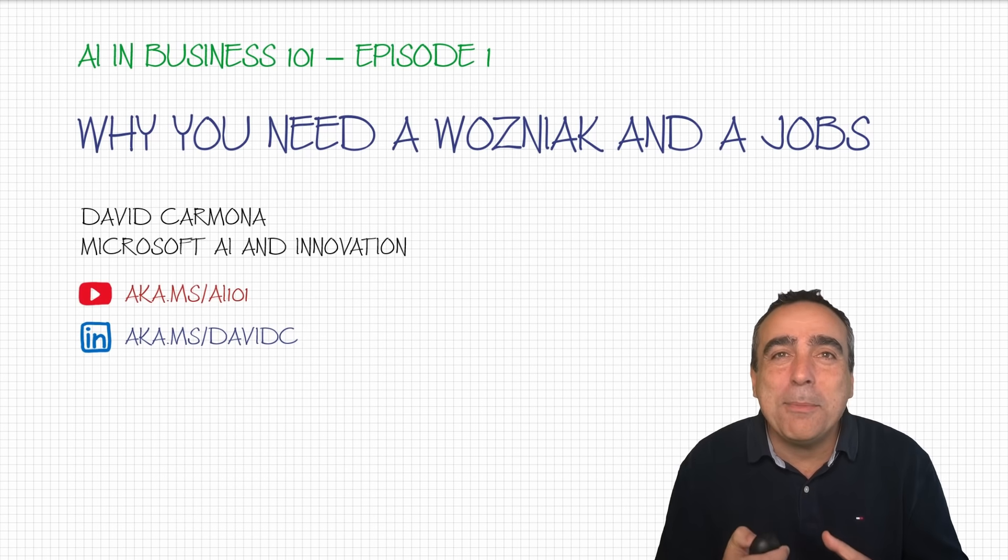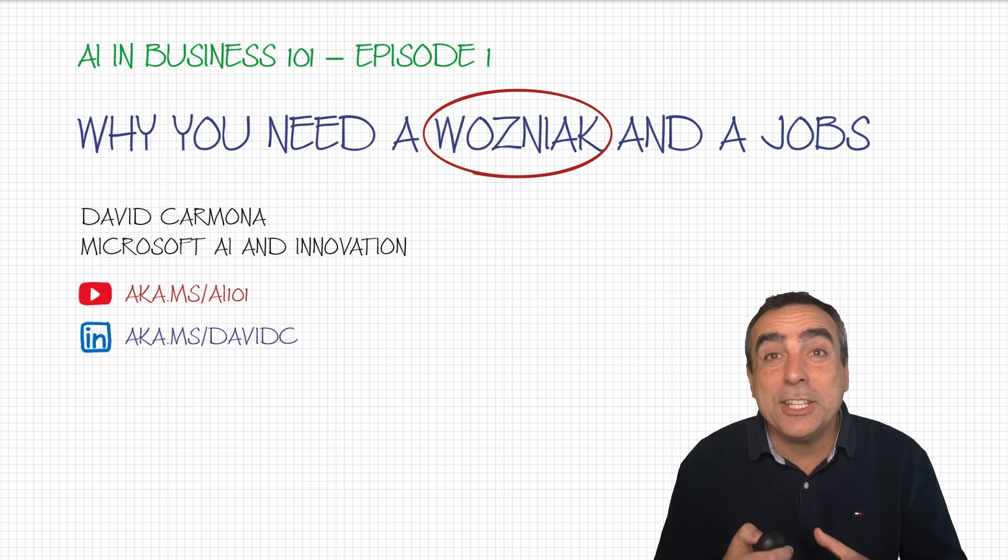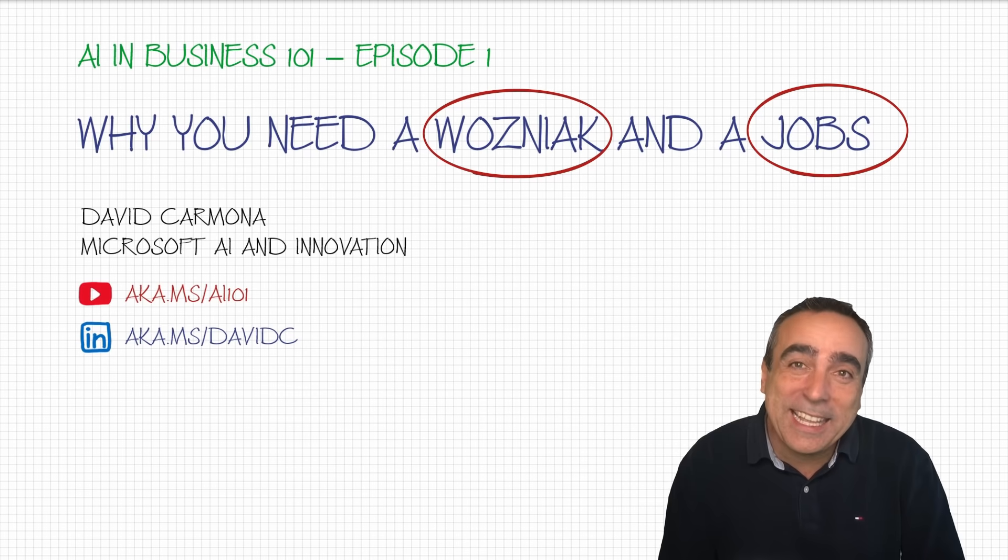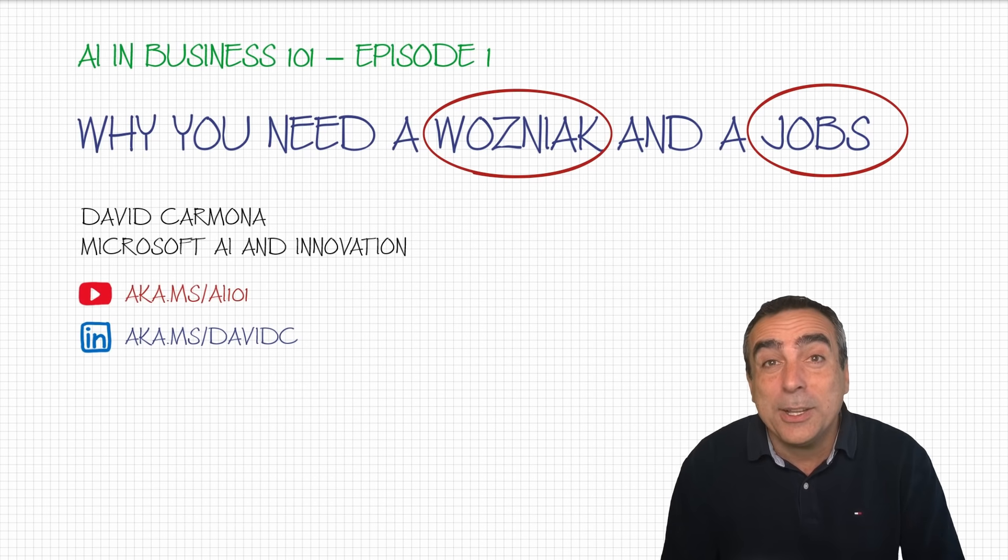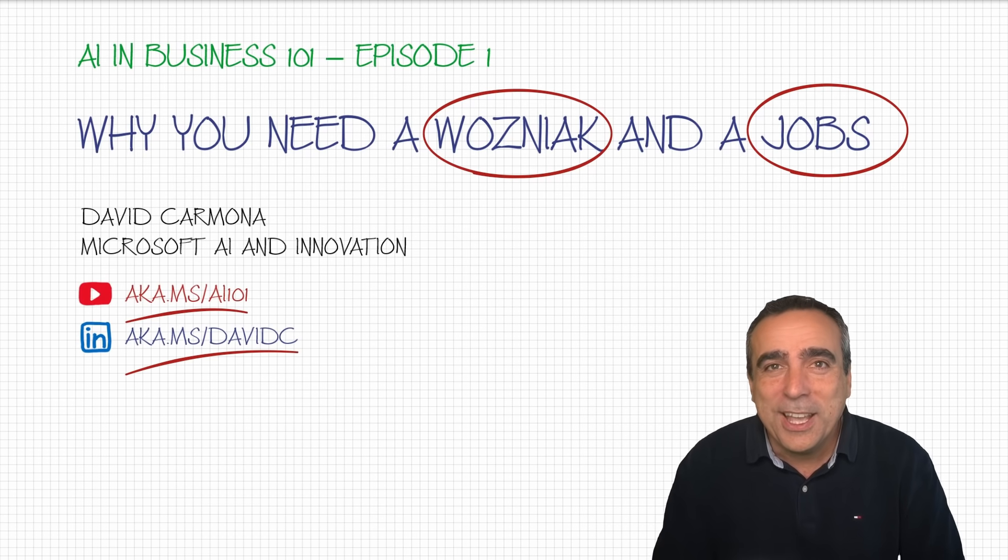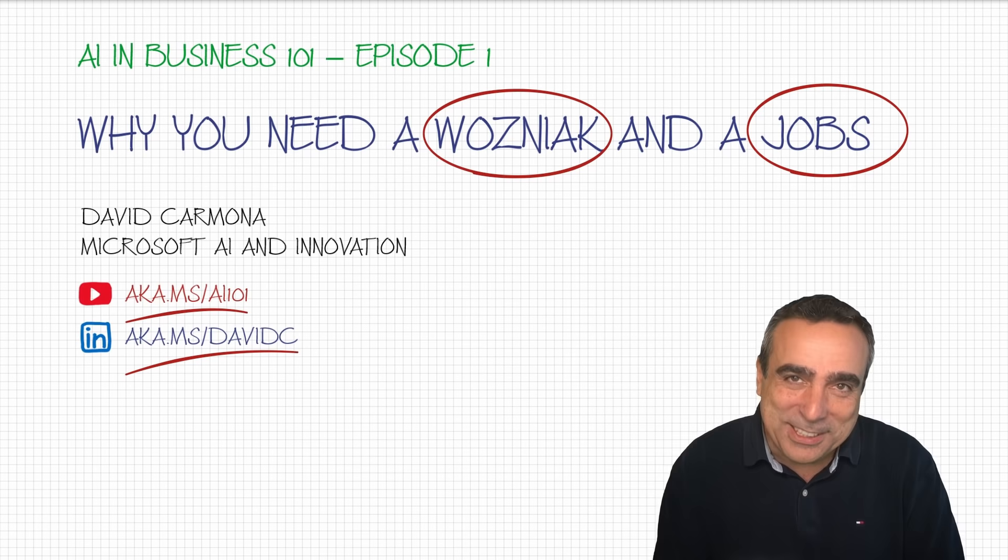If you have to choose between somebody like Wozniak or somebody like Jobs for your team, who would you pick? We'll look at that question in this first episode for AI in Business 101, a video series with tips from companies who are successful embracing AI. You can get access to all the videos in this series, including another one focused on the technology here, and you can follow me on LinkedIn for new videos. Okay, so let's get started.